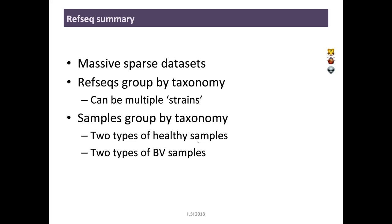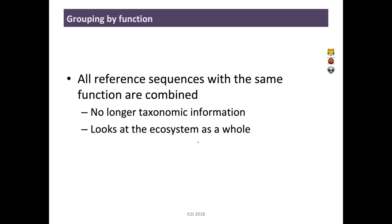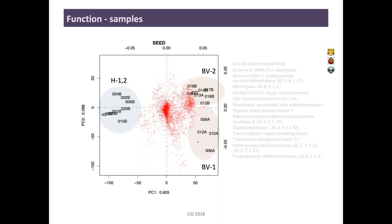Now let me show what happens when we group by function. We're combining all reference sequences — no matter what organism they come from — that share the same inferred function. There's no longer taxonomic information; we're looking at the ecosystem as a bag of functions. Grouping the samples in another principal component plot, the samples for health now group together. This means that regardless of which Lactobacillus species you have, if you're a healthy individual, those Lactobacillus species are doing essentially the same thing. The BV samples still separate by function with the same separation as at the gene level — reassuring, nice, clean, and robust.